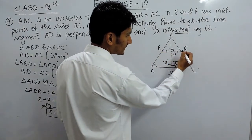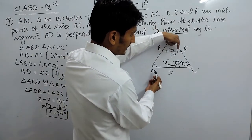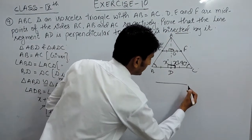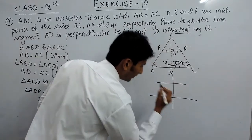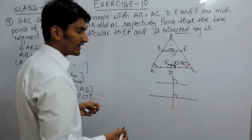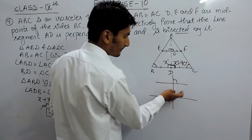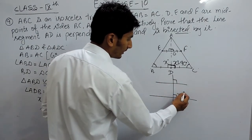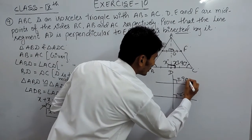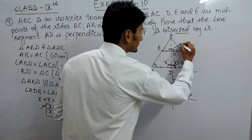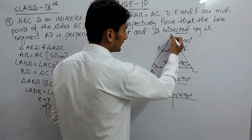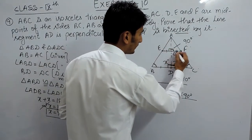Now, from the midpoint theorem: E and F are given as midpoints of AB and AC. If we join these midpoints, by the midpoint theorem EF must be parallel to BC. Since AD is a transversal, the corresponding angles must be equal. So if angle ADB is 90 degrees, then angle AOF — the angle AD makes with EF — must also be 90 degrees. Therefore AD is perpendicular to EF.